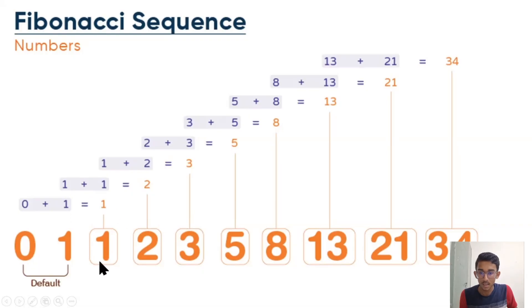And the subsequent terms are the sum of the last two terms. So basically, 1 is 0 plus 1, 2 is the sum of last two terms 1 and 1, 3 comes by adding 1 and 2 and so on.